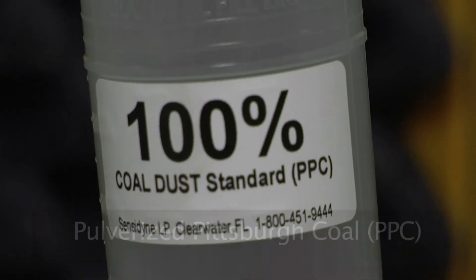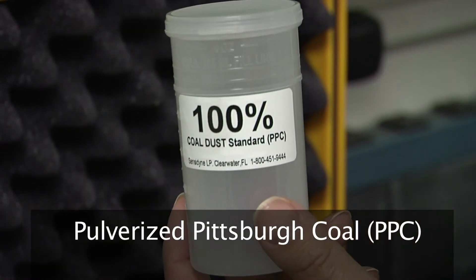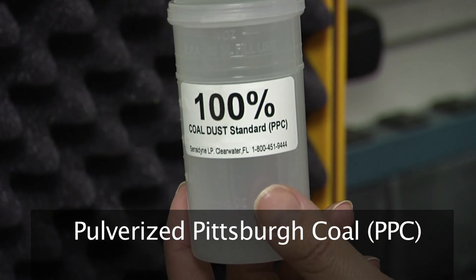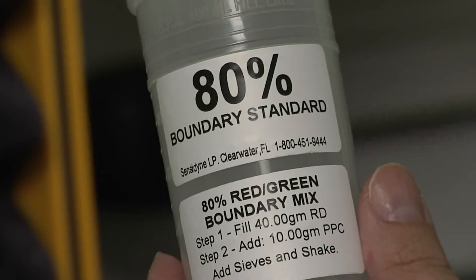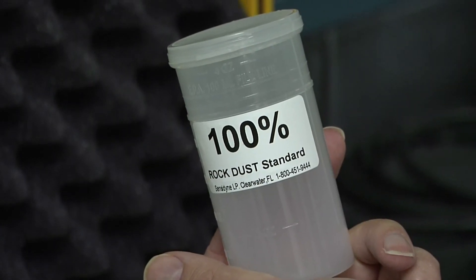Included will also be containers for your calibration samples of 100% PPC, 80% rock dust and coal dust, and 100% rock dust.